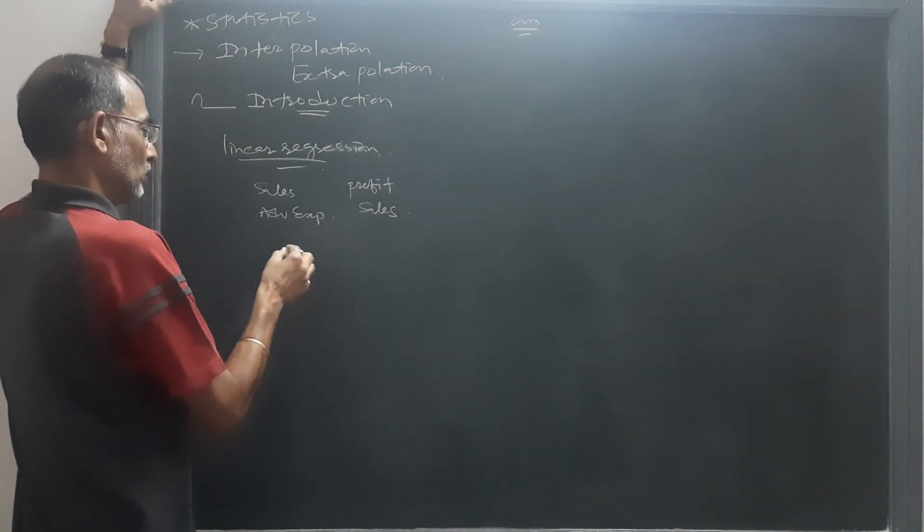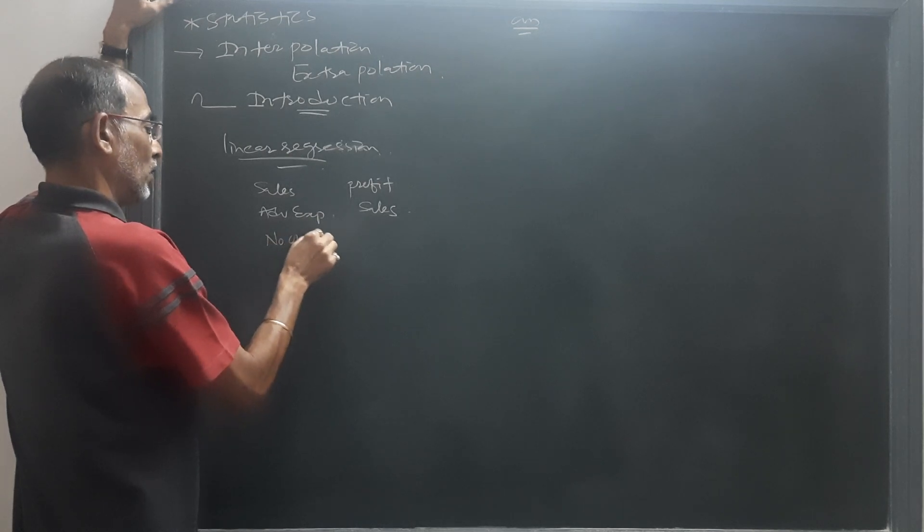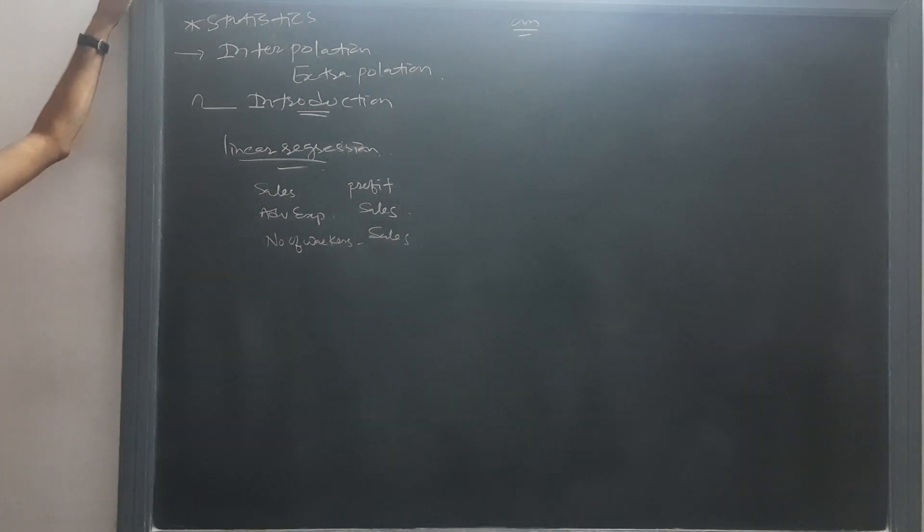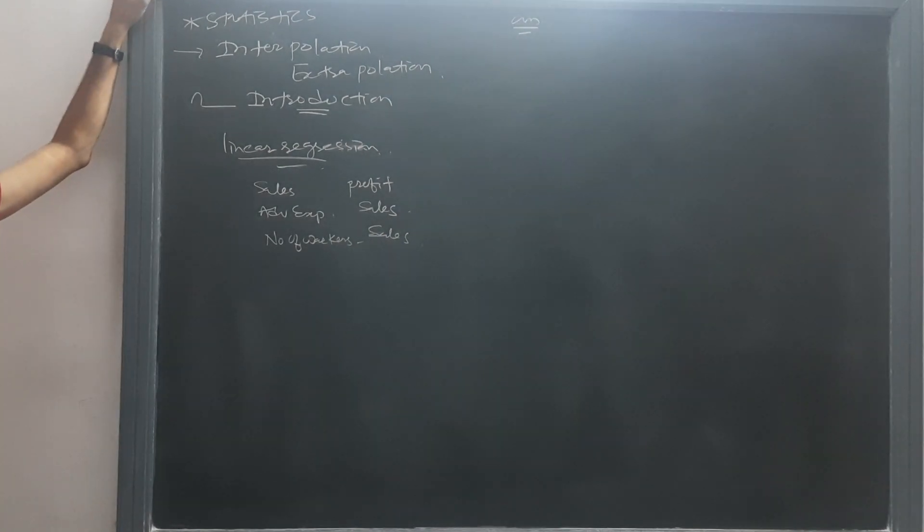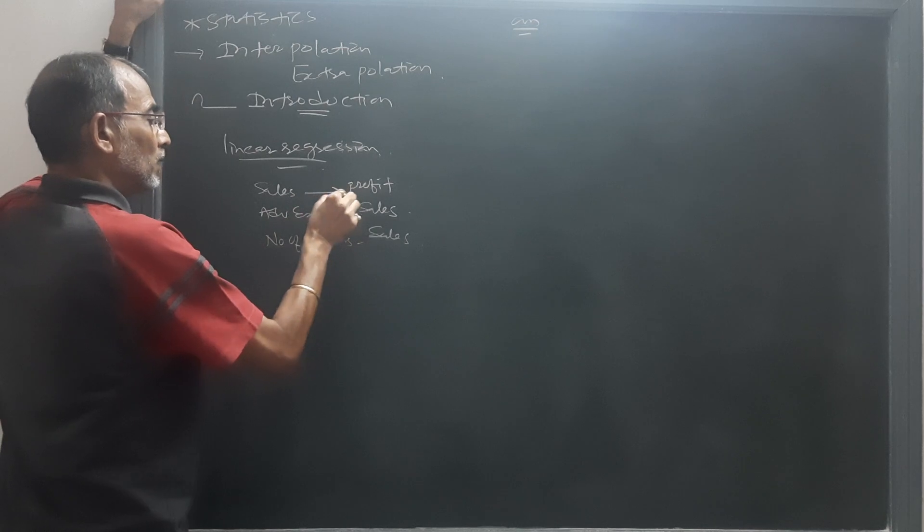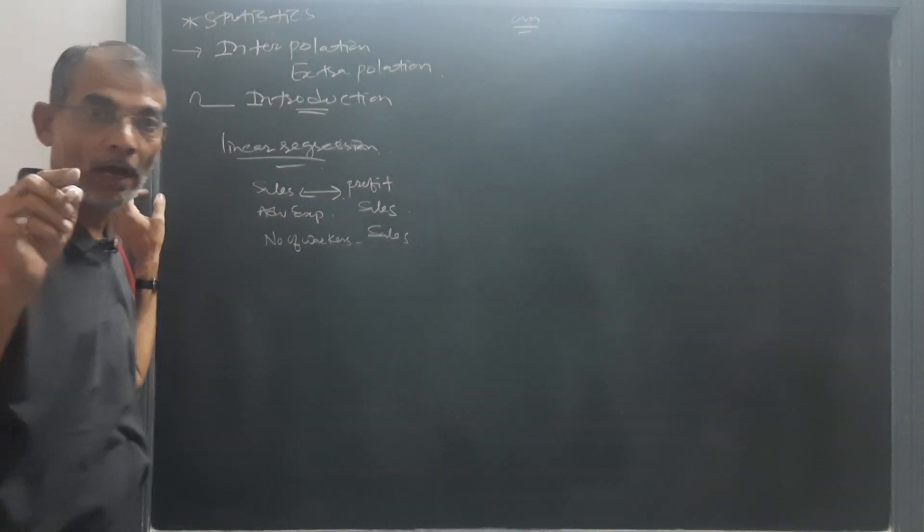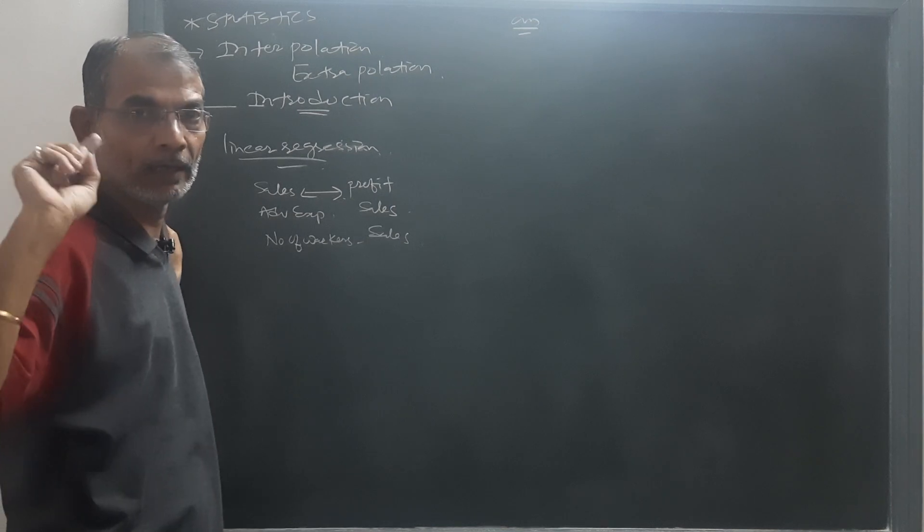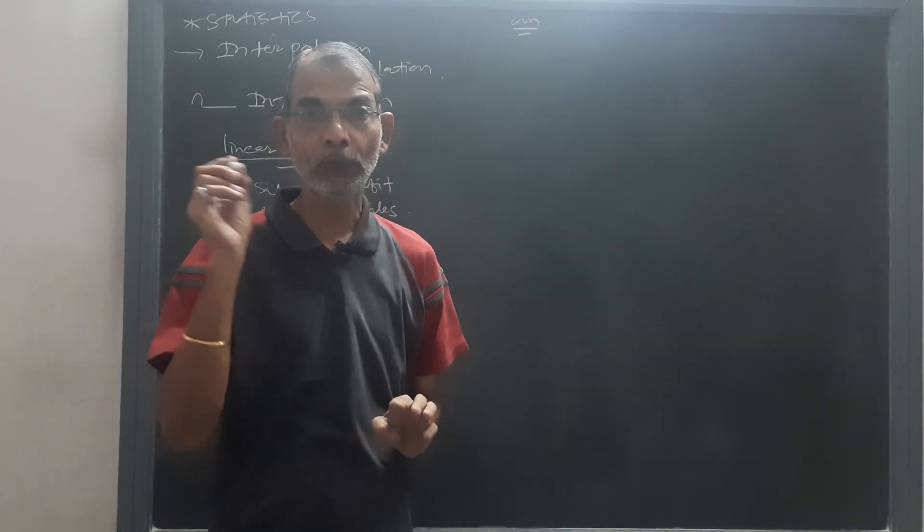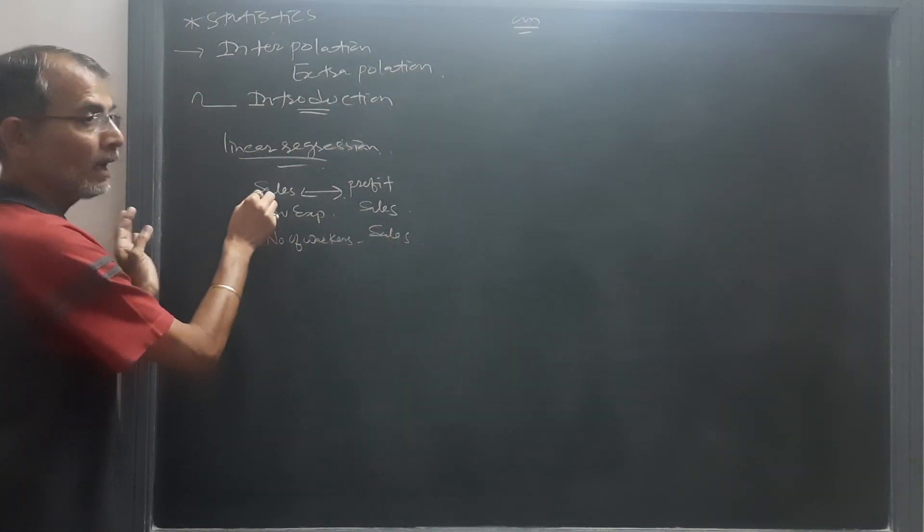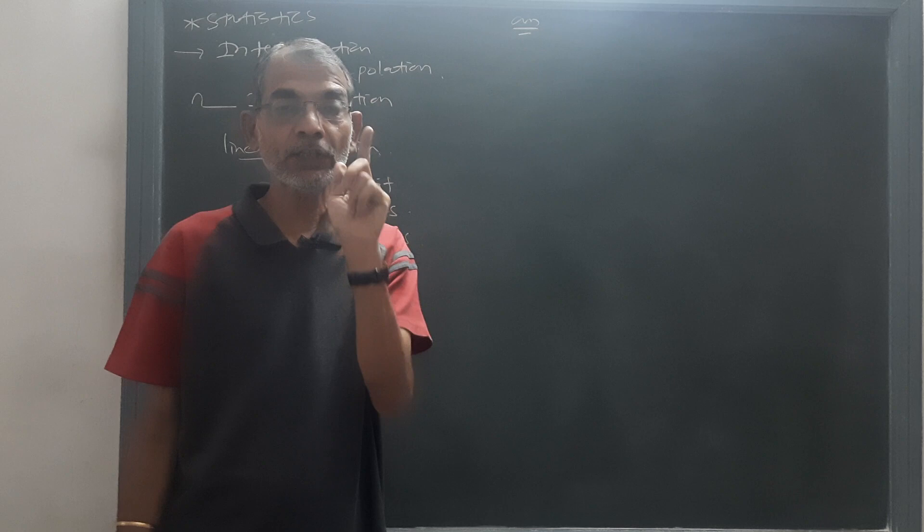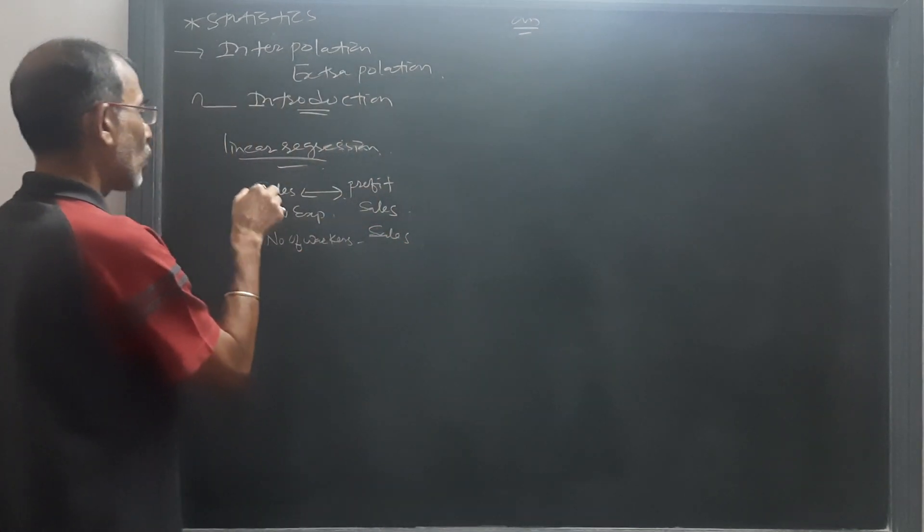While number of workers and sales. So, here sale again is a dependent variable. In linear regression, we learnt that there is a line between dependent and independent variable. By finding that we could find if sale is so, how much will be the profit? Or if we want such amount of profit, then what should be the amount of sales?